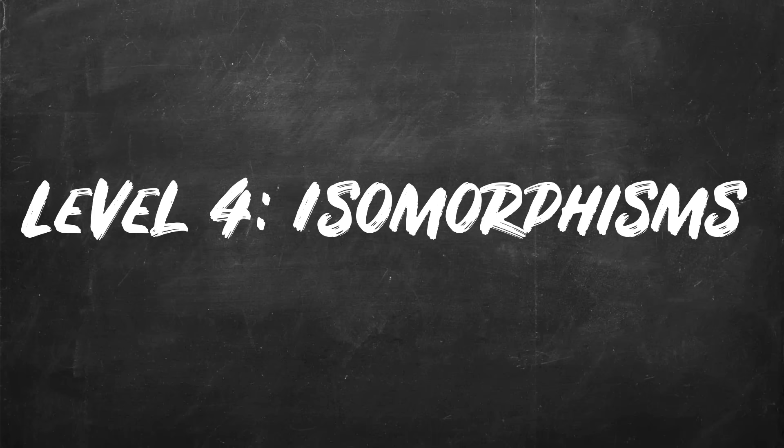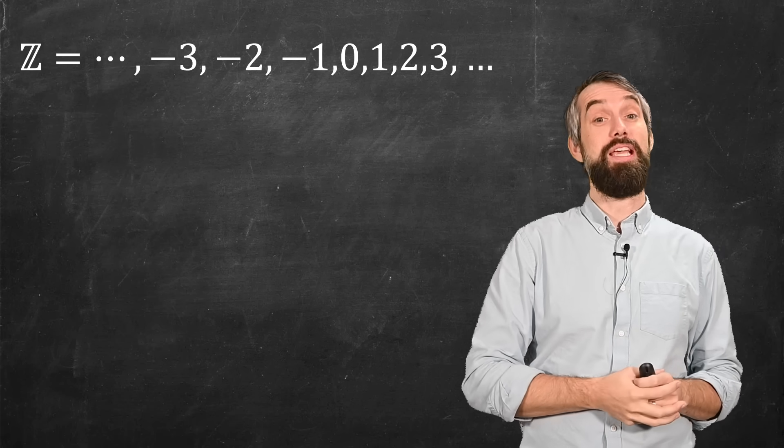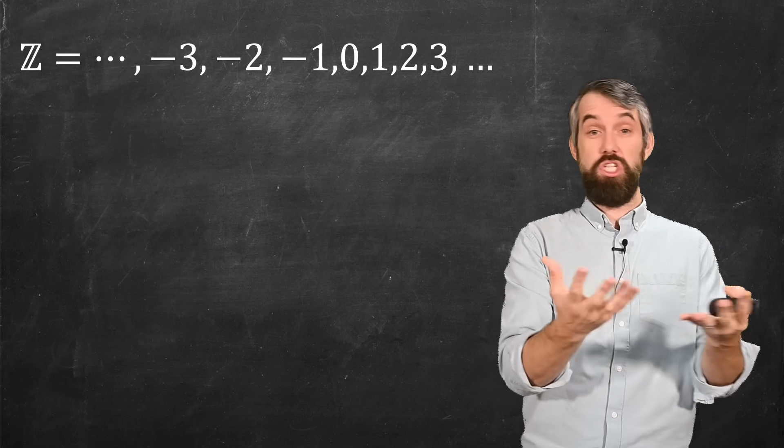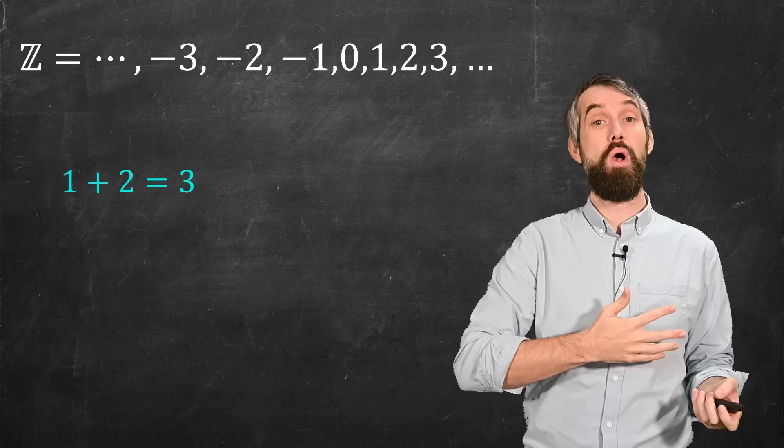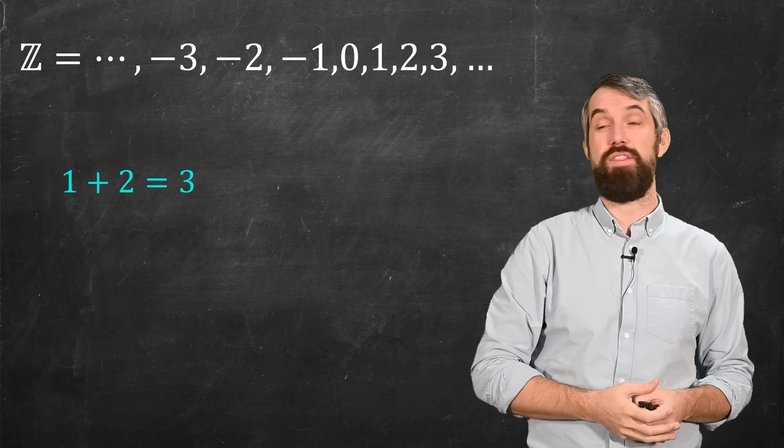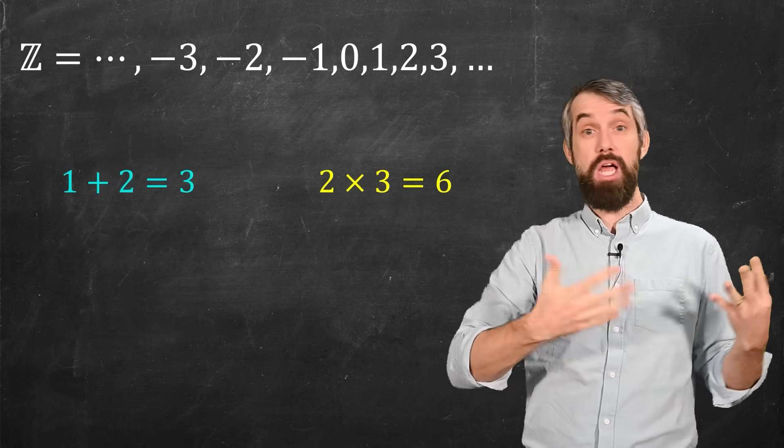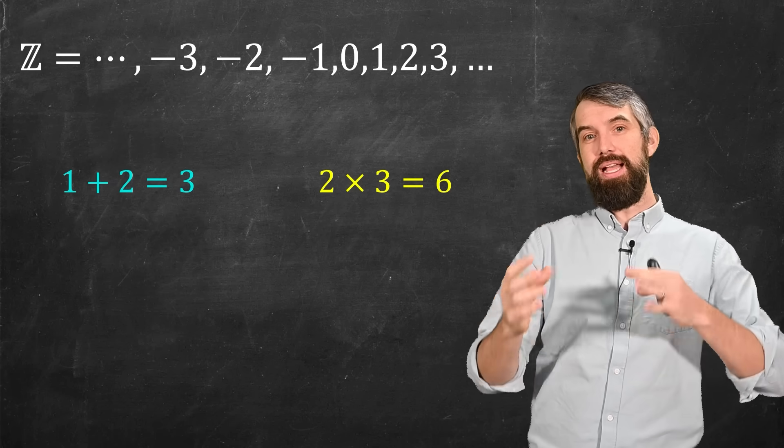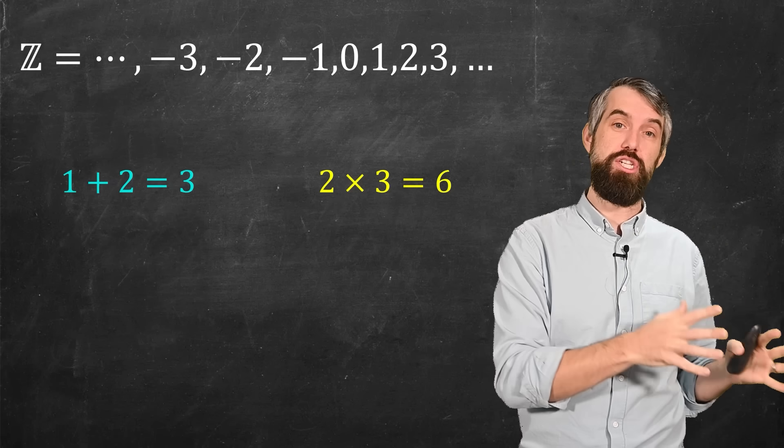But actually, bijection is just a special case of the level 4 notion of equivalence, which is called isomorphisms. The idea here is that if I have a set, for example the integers, the integers aren't just a set of numbers that sits there and doesn't do anything. The integers have what we call additional structure. I can add things in the integers. 1 plus 2 equals 3. I can multiply things in the integers. 2 times 3 equals 6. It's a set, but it also has this additional structure of addition and multiplication.